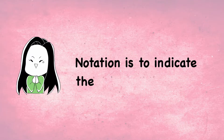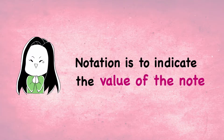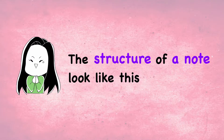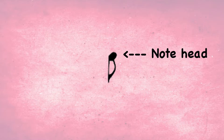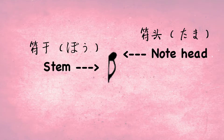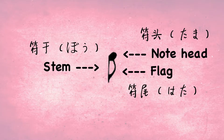Notation is to indicate the value of the notes — how long or short you should hold the note. The structure of the note looks like this: the note head (futou), the stem (fugan), and the flag (fuwei).